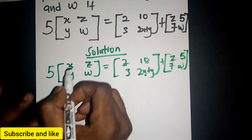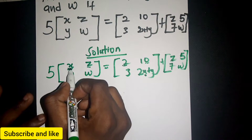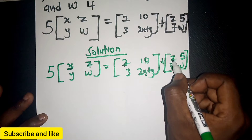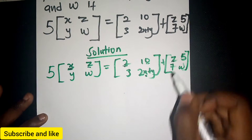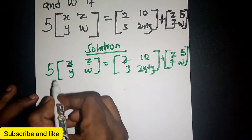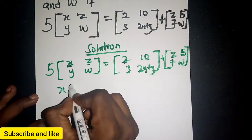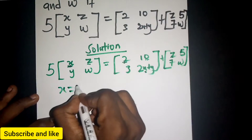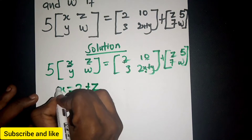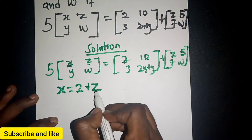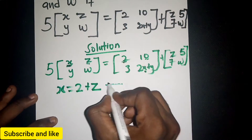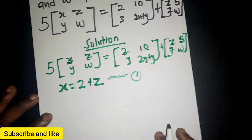Let's start with x. We have x at a position equal to 2 plus z at that same position. But we don't know the value of z yet, so let's consider this as equation 1: 5x = 2 + z.